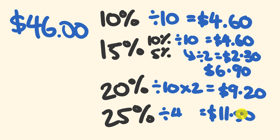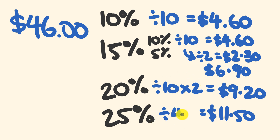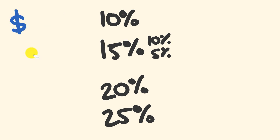Let me run through those rules once more. For 10%, divide by 10. For 15%, divide by 10, then halve that answer and add it on. For 20%, divide by 10 and then double the answer. For 25%, just divide your initial number by four.